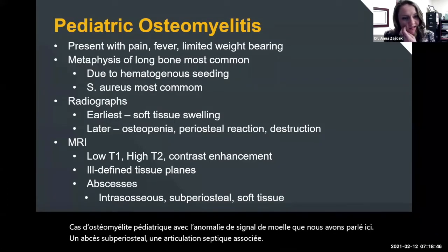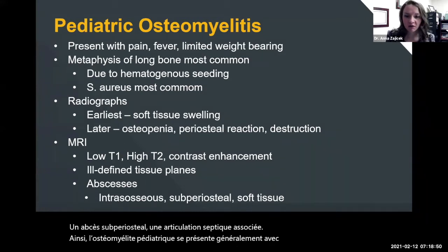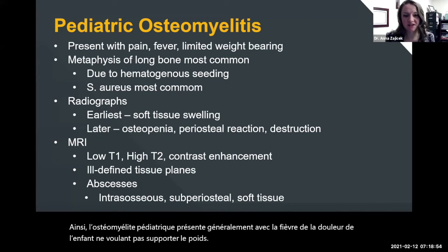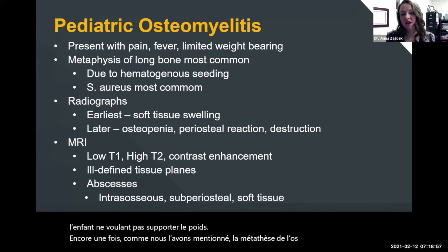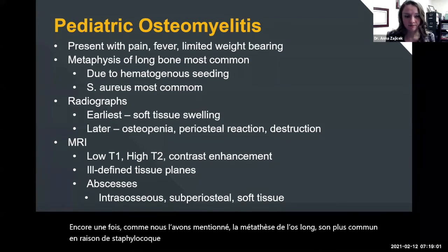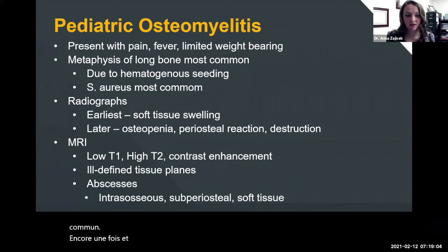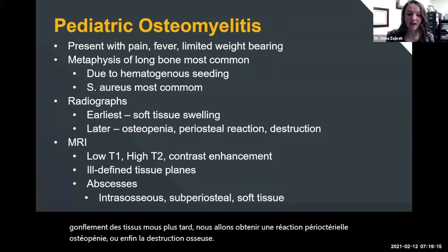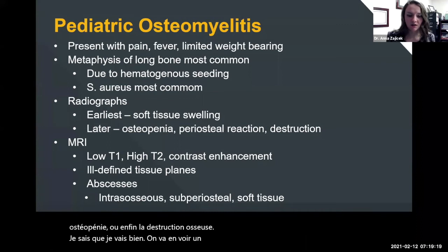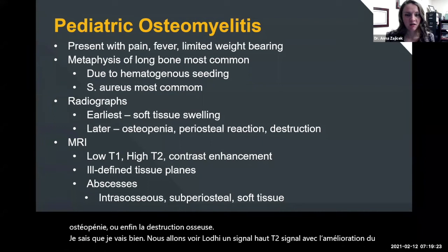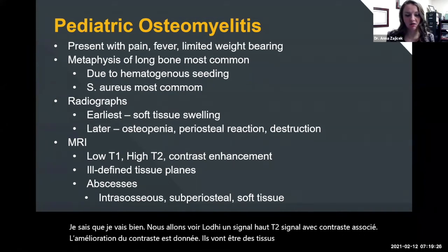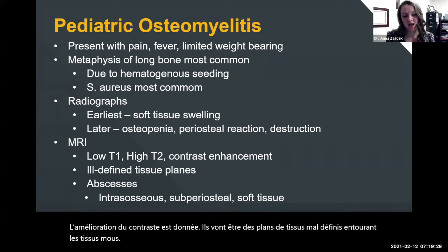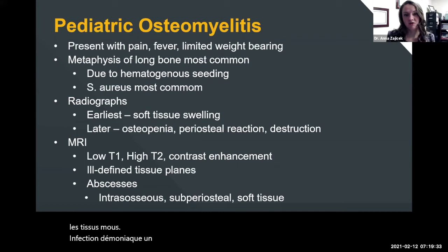This is a case of pediatric osteomyelitis with marrow signal abnormality, a subperiosteal abscess, and an associated septic joint. Pediatric osteomyelitis typically presents with pain, fever, and the child not wanting to bear weight. The metaphysis of long bone is most common due to hematogenous seeding; Staph aureus is the most common organism. On radiograph, the earliest finding is soft tissue swelling, then osteopenia, periosteal reaction, and finally bone destruction. On MRI, we see low T1 signal, high T2 signal with contrast enhancement, ill-defined tissue planes, surrounding soft tissue edema, and abscess — including intraosseous, subperiosteal, and soft tissue locations.